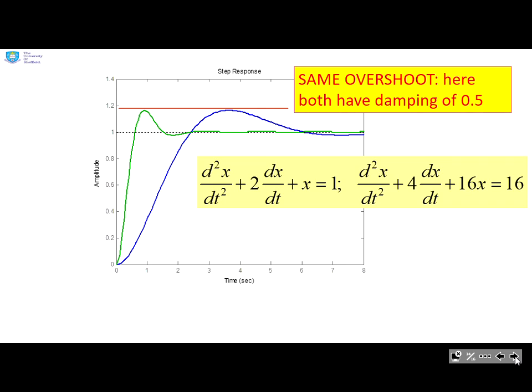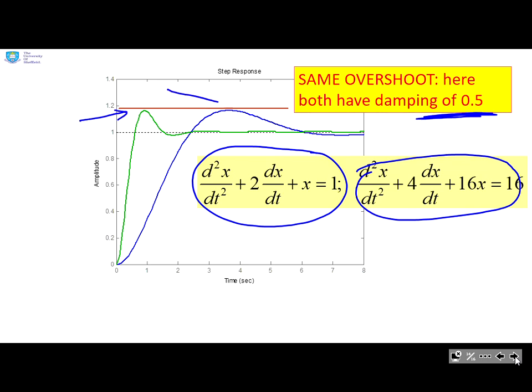Here's the key thing to emphasize: the natural frequency doesn't come into the overshoot. You'll see I've got two very different systems but they've got the same damping ratio, and they've got the same peak overshoot. So the peak overshoot depends solely on the damping ratio.